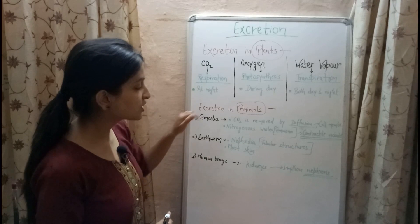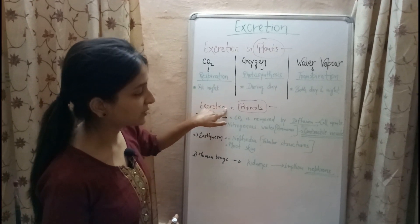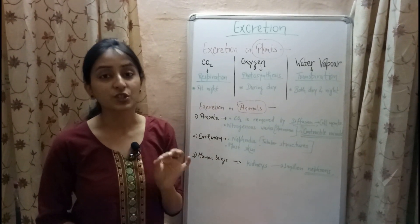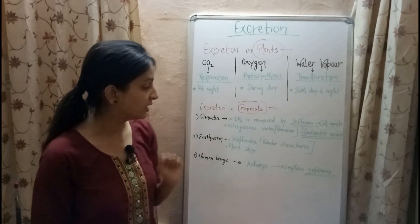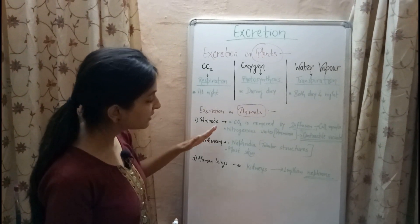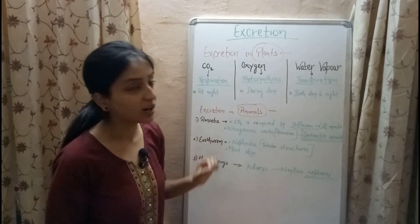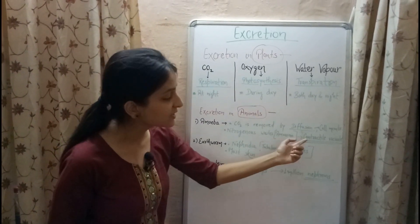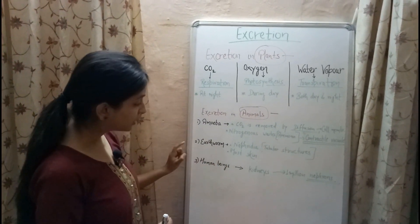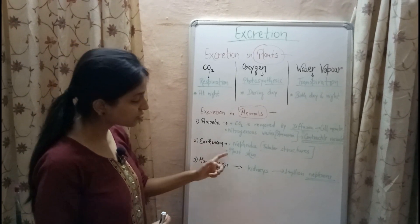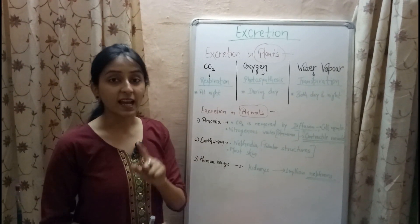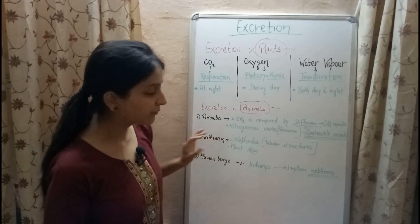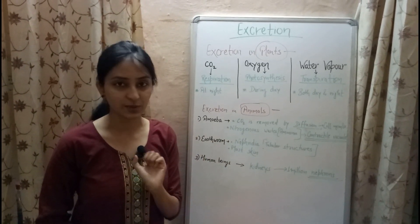In simple animals like amoeba, excretion of carbon dioxide occurs by diffusion through the cell membrane, which is also known as the plasma membrane. The nitrogenous waste like ammonia is excreted by a unit known as the contractile vacuole. In earthworms, excretion occurs through moist skin, and besides moist skin, tubular structures called nephridia help in excretion of waste products.